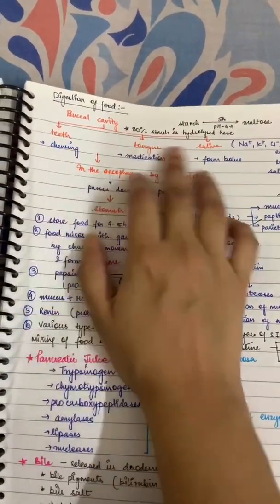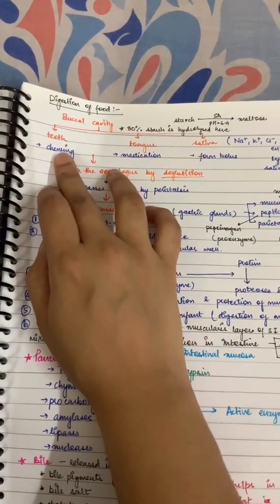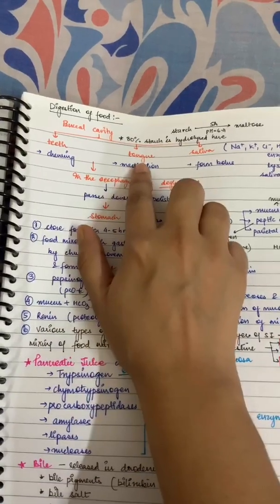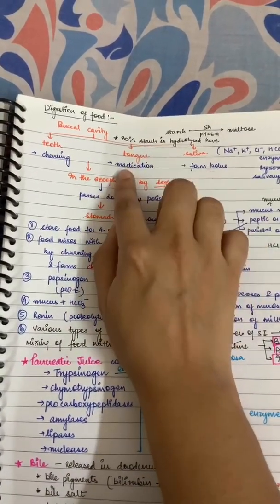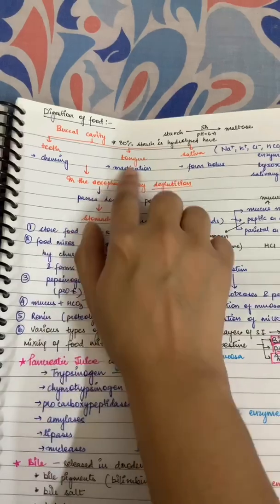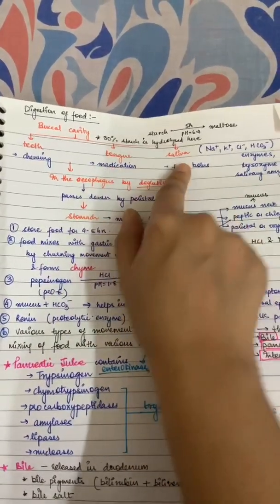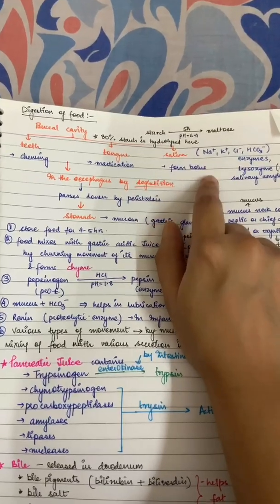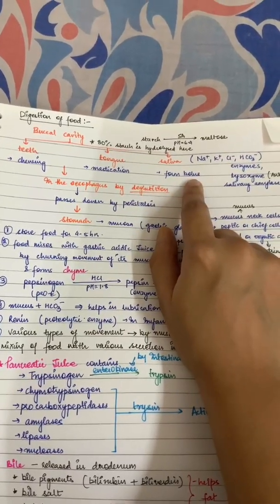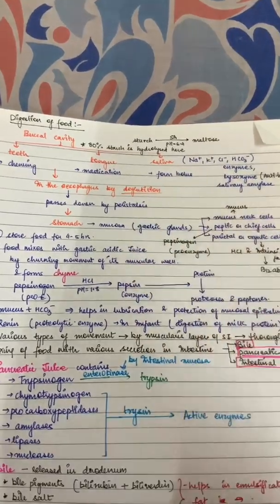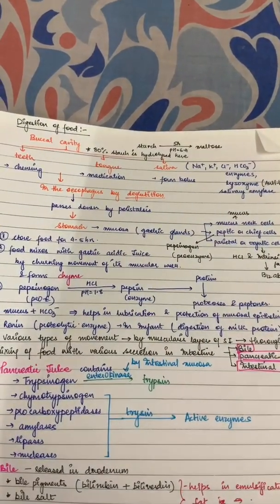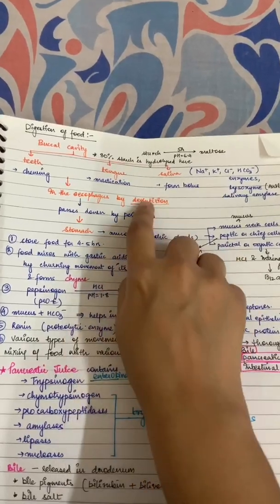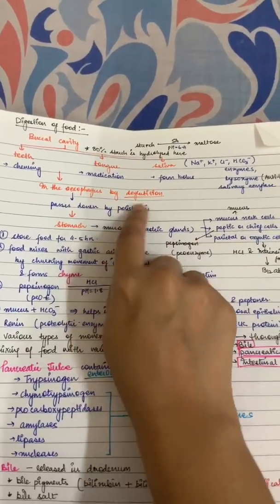Now let's go to digestion of food, proceeding in the same series — buccal cavity first. In the buccal cavity, we have teeth, tongue, and saliva. The teeth break food particles into small pieces by chewing. The tongue mixes the chewed particles with saliva — this process is called mastication — and the mixture becomes a bolus. Bolus is the masticated food mixed with saliva, which we then deglutate, meaning swallow.